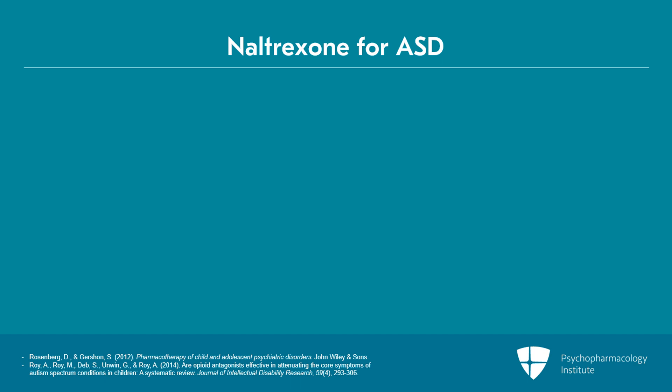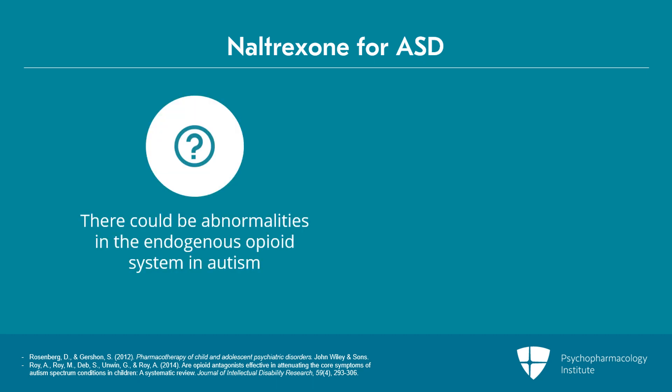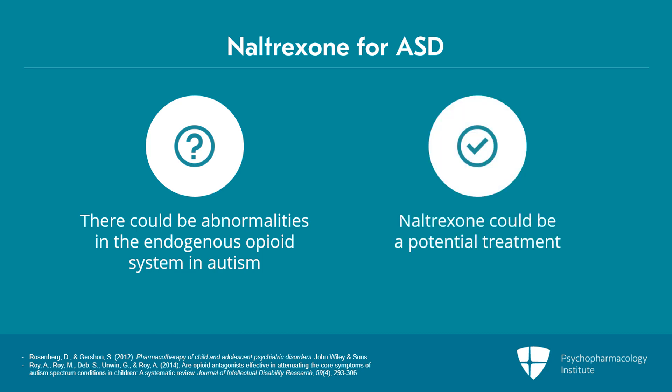Naltrexone also has a potential indication for autism spectrum disorder. Symptoms seen in opioid intoxication, such as social withdrawal, stereotypies, and sensory sensitivity, led to the hypothesis that there could be abnormalities of the endogenous opioid system playing an etiologic role in autism. As such, naltrexone was considered as a potential treatment for autism.